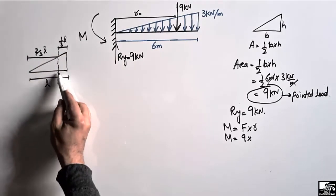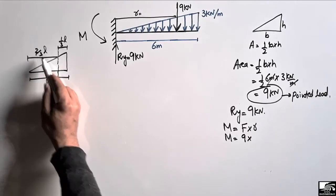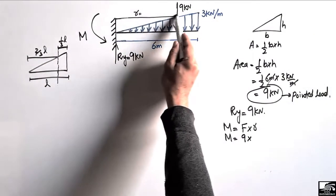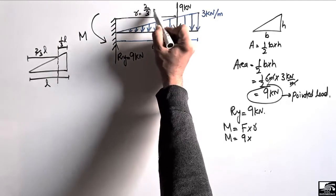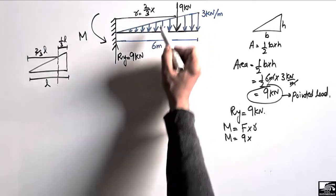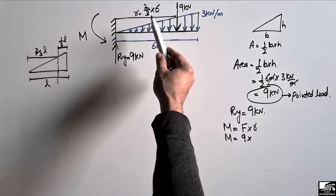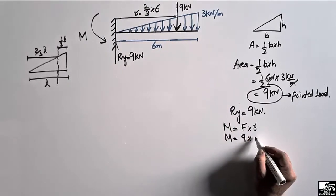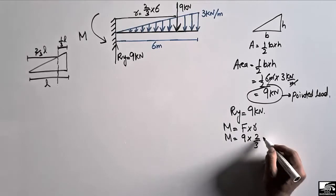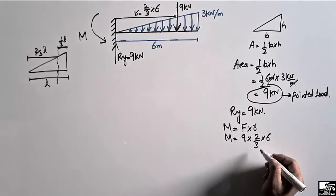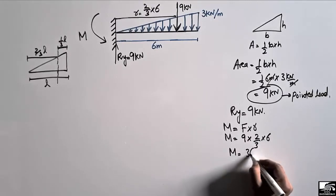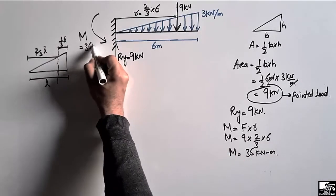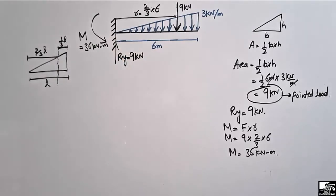So the distance from the fixed support to the point load is two-thirds of L, which equals two-thirds of 6 m = 4 m. This is the moment arm. Multiplying: M = 9 kN × 4 m = 36 kN·m. This is the support moment. We have now found all support reactions: Ry = 9 kN and M = 36 kN·m.